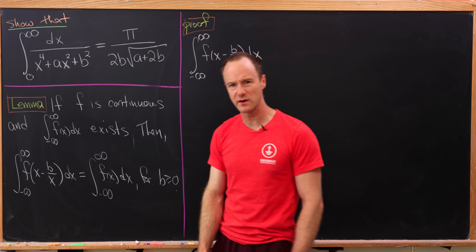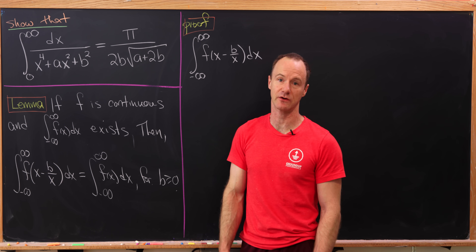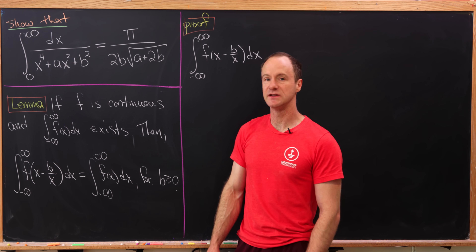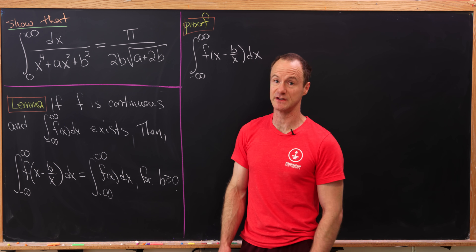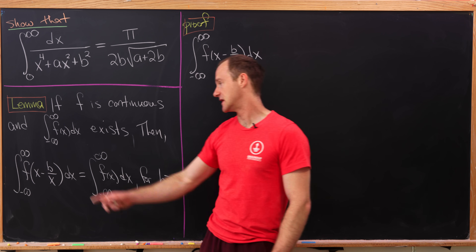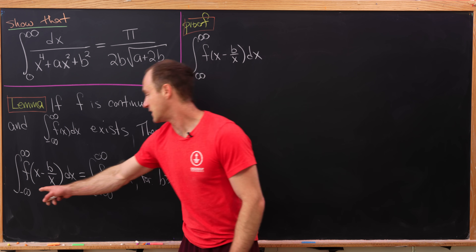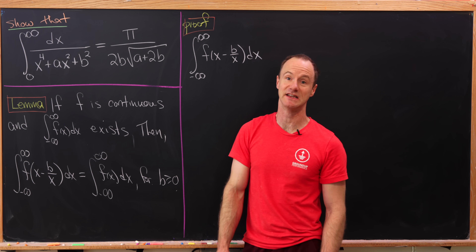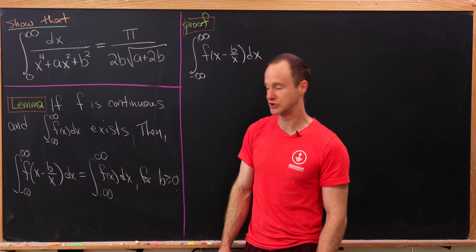Since this is a quartic in the denominator, this is actually pretty tricky. You could factor this as two irreducible quadratics, but I think that's more work than it's really worth. So we're going to use the following lemma to simplify things a little bit. This lemma is kind of general: it says that if f is continuous and the integral from minus infinity to infinity of f of x exists, then the integral from minus infinity to infinity of f evaluated at x minus b over x is the same as the original integral, for b greater than or equal to zero.